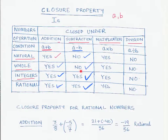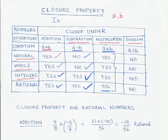Now let us look at the closure property under multiplication. We take any two numbers a and b and see the result of multiplication. For all four types — natural numbers, whole numbers, integers, and rational numbers — whenever you multiply any two numbers of the same type you always get that same type. Whenever you multiply any two rational numbers the result is always a rational number, hence rational numbers are closed under multiplication.